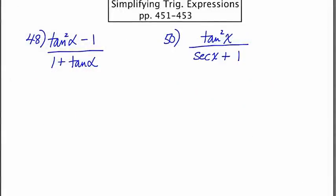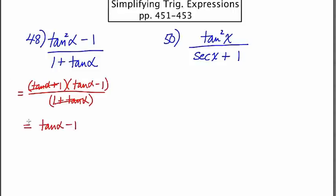For our last two problems, we're going to simplify using a different factoring technique. This time we're going to use the difference of two squares. As I look at number 48 and I focus on the numerator, I see that I have a difference of two squares. So I'm going to factor that accordingly. Which will be tan alpha plus 1 times tan alpha minus 1. And this is all over 1 plus tan alpha. I notice that I have factors that are common to the top and the bottom. And we're left with just tan alpha minus 1. Easy.